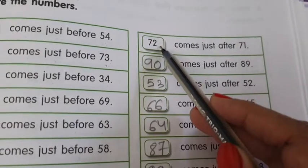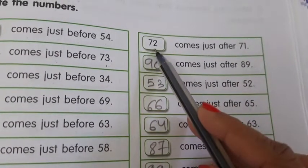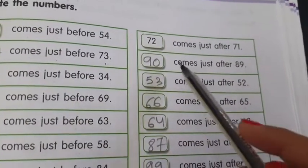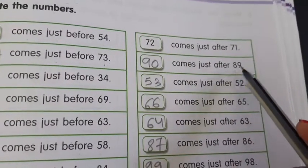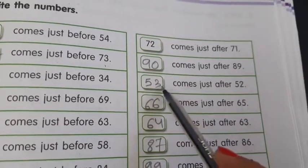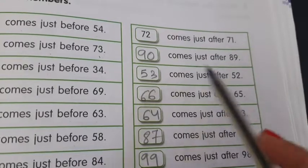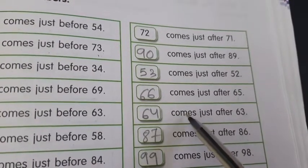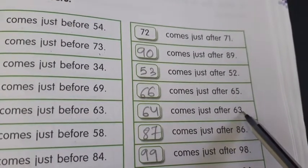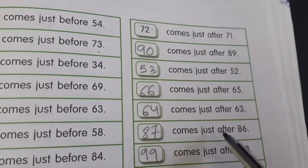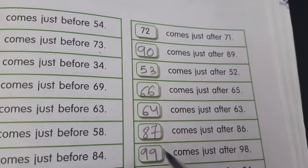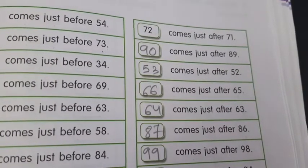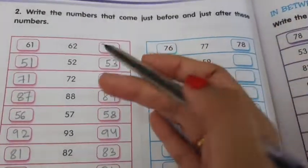Now see the after numbers. One example is already done in the book: 72 comes just after 71. Dash comes just after 89 — 90. Dash comes just after 52 — 53. Dash comes just after 65 — 66. Dash comes just after 63 — 64. Dash comes just after 86 — 87. Dash comes just after 98 — 99. Do the rest of the questions by yourself.